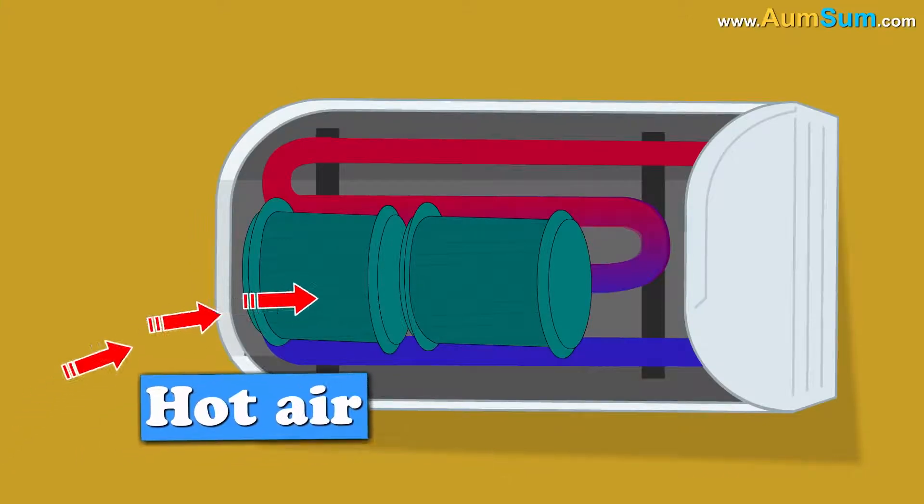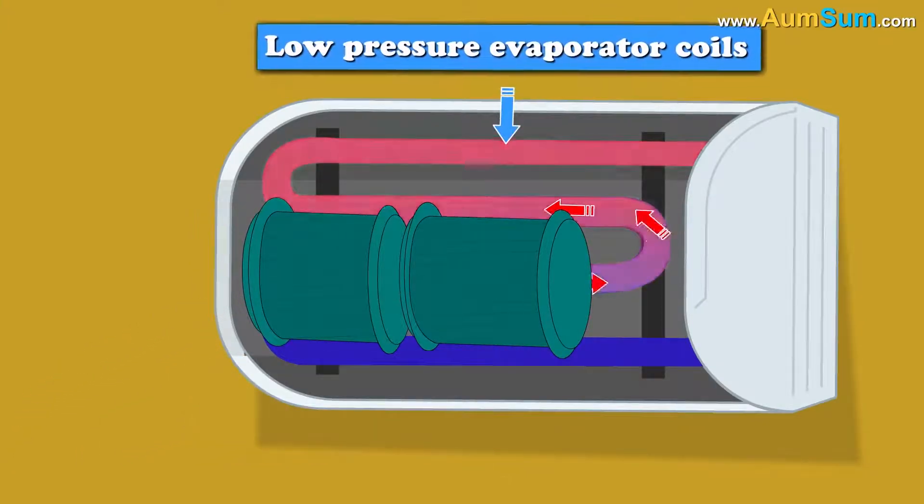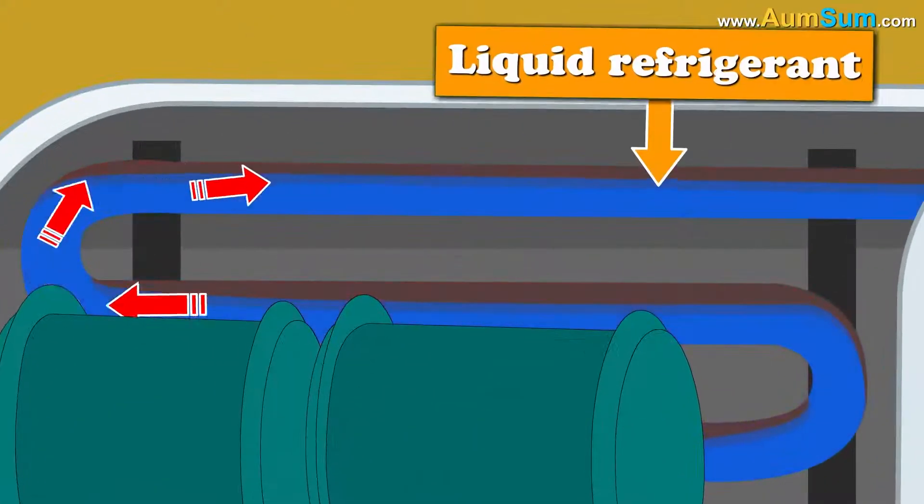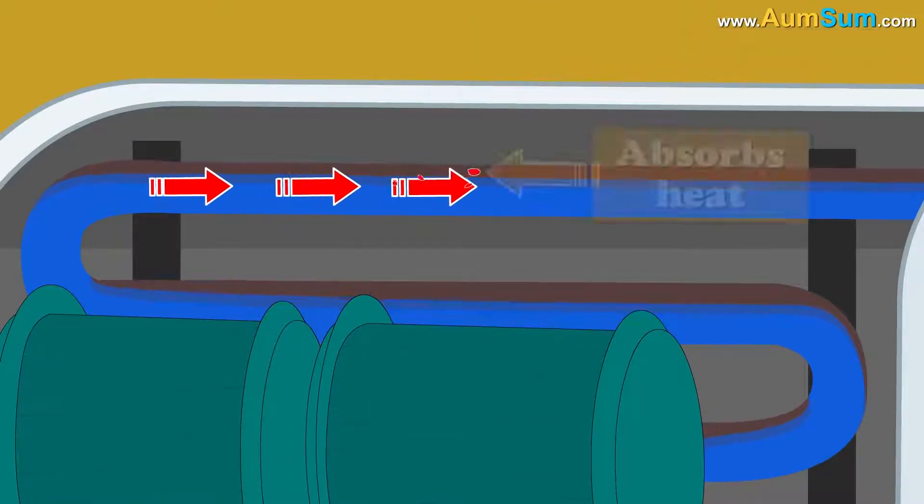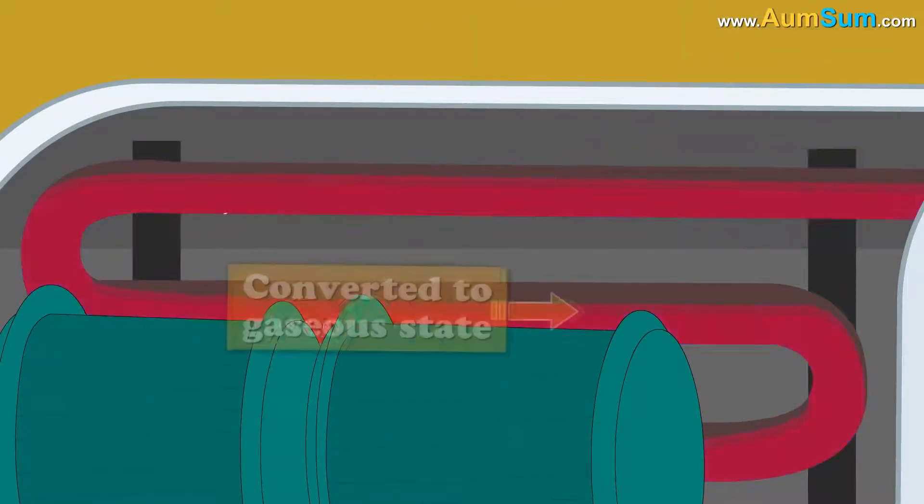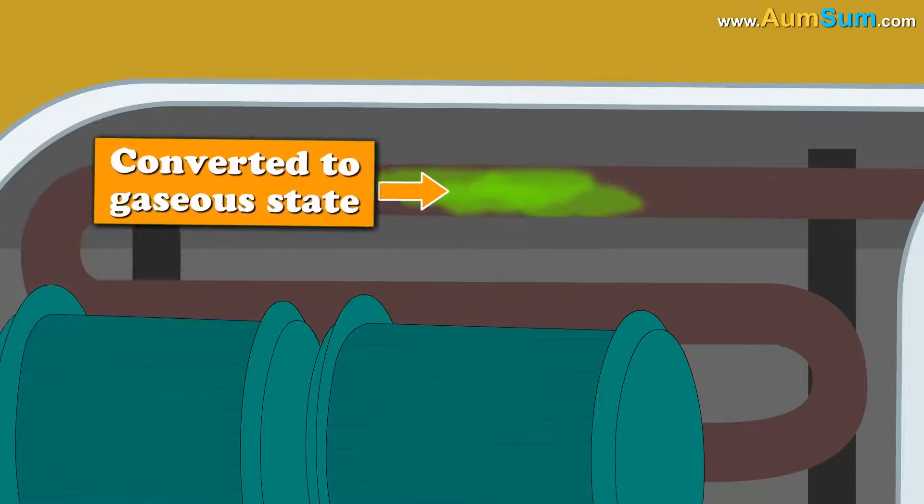When hot air from the room flows over the cold, low pressure evaporator coils, the liquid refrigerant which is present inside the coils absorbs this heat and starts getting converted to gaseous state.